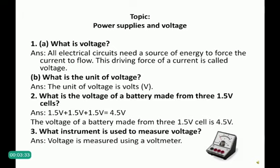Question 2: What is the voltage of a battery made from 3 cells of 1.5 volts each? This is a simple question. If you add 1.5 volts three times, then the answer is equal to 4.5 volts. So the voltage of a battery made from 3 cells of 1.5 volts is 4.5 volts.